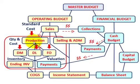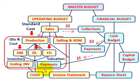Remember, the standard cost developed here in our production operation is really being used by the sales department for selling the product. Also, it does affect our cost of goods sold and our income statement based on these variances that we're going to be looking at. So that's where we're coming from with standard costing.